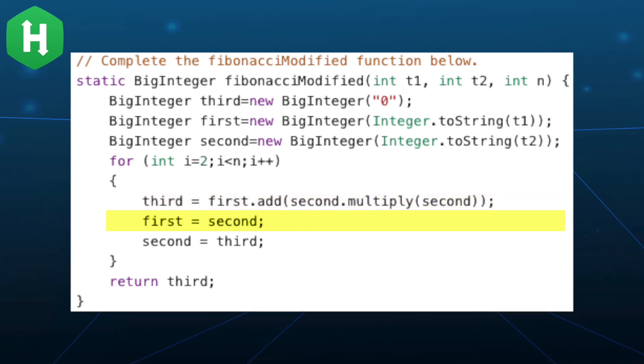Next, we reassign the BigInteger second to the BigInteger first. Next, we reassign the BigInteger third to the BigInteger second.